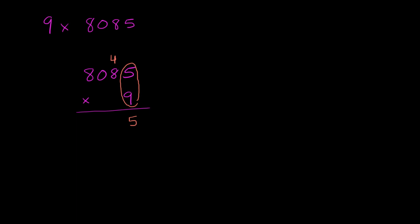Now we're ready to move on to 9 times 8. We calculate 9 times 8, and then add the 4 that we just carried. So 9 times 8 is 72, plus the 4 is 76. We'll write the 6 in the tens place and carry the 7.